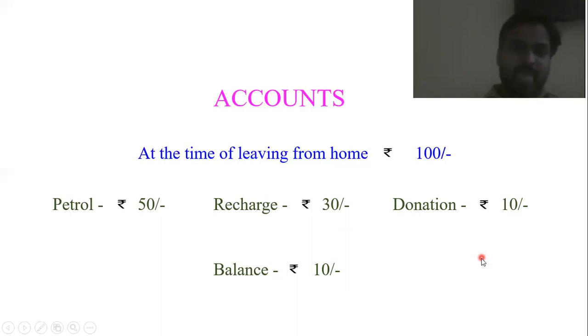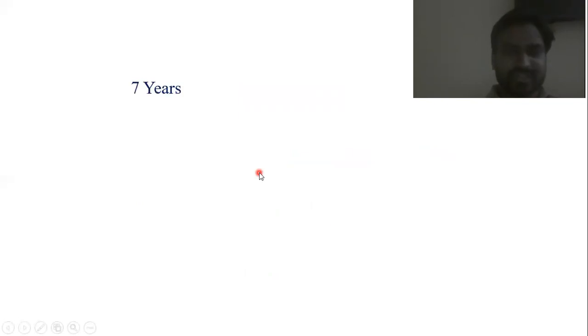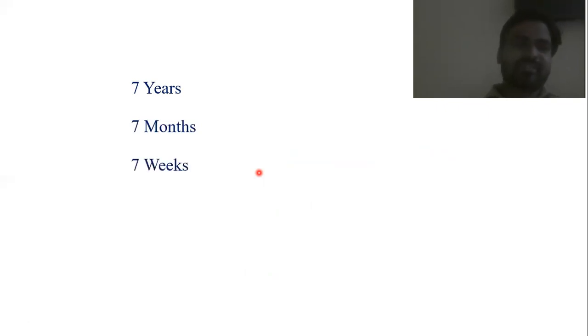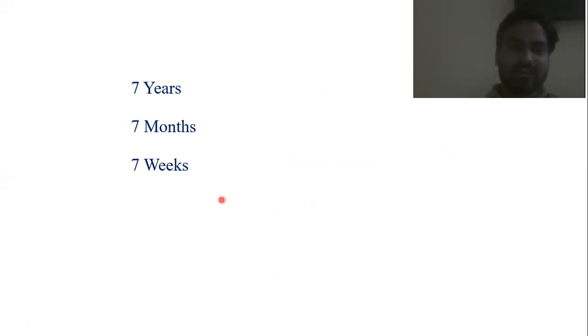If we twist the question a little and complicate accounts: what if this is our regular schedule from the past 7 years, 7 months, 7 weeks, and 7 days? This is our daily routine from the past seven years, seven months, seven weeks, seven days.